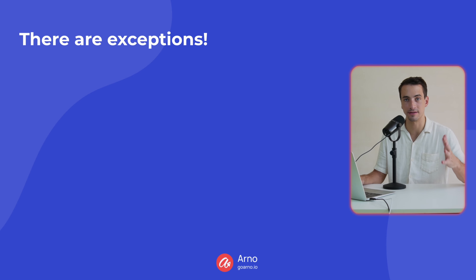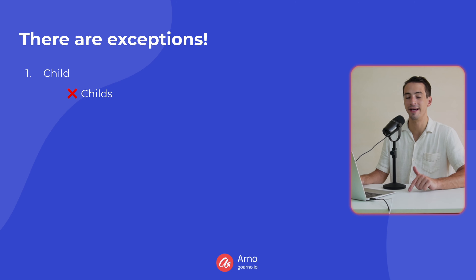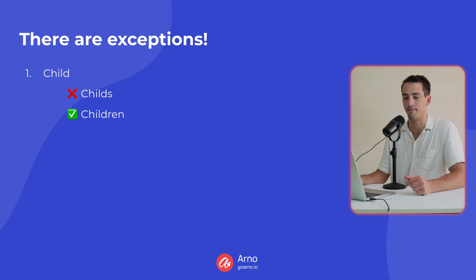The plural form is different — it's irregular, more complicated. For example, 'child.' 'Childs' with an S is not a word. To make child plural, you have to add R-E-N: children. So you can have one child, but then you have two children, three children, and so on.